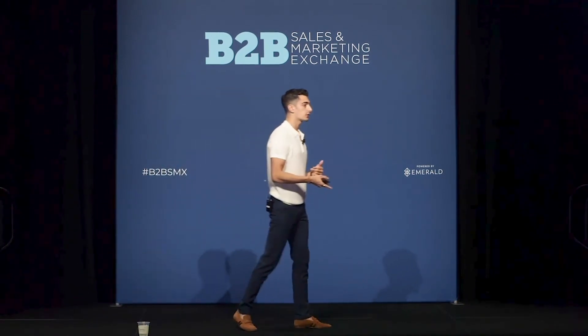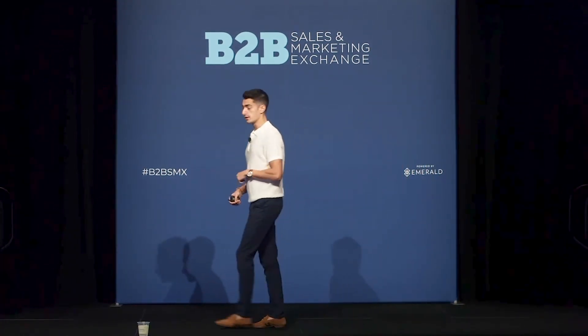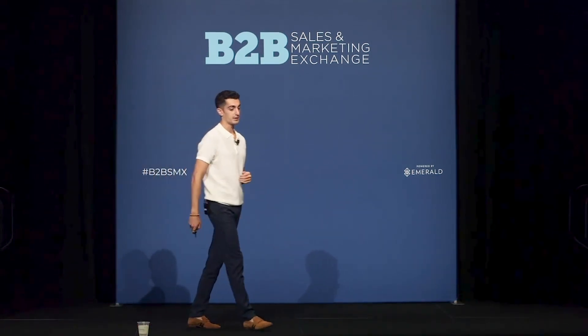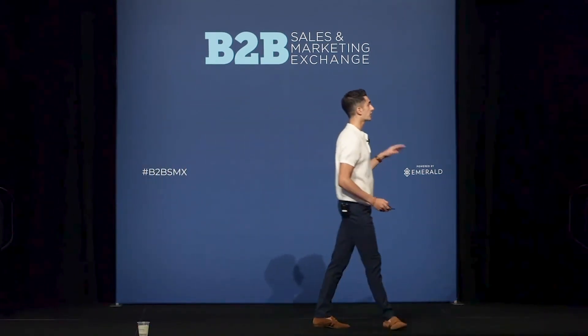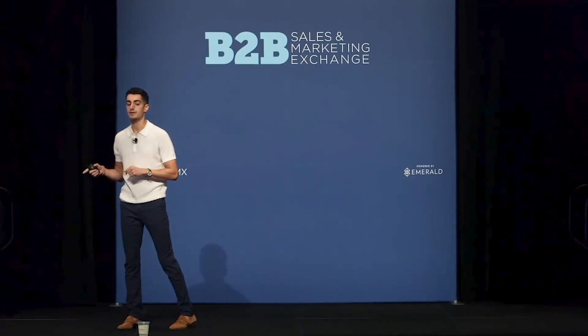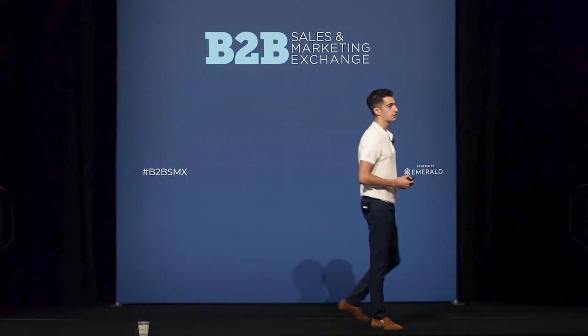We increase our personalization and expand upon the channels we're using — so for these we may use email, phone, and even LinkedIn in our cadences. For our tier one accounts, these are the accounts we're doing white glove service for. We're going to use one-to-one personalization. The higher we go up in the tiers, the more time spent, more channels leveraged, and more research done — because your time is valuable as a salesperson.